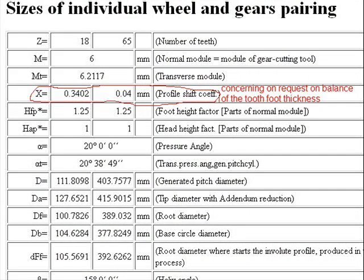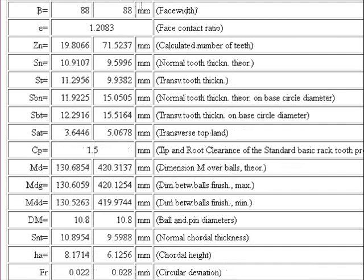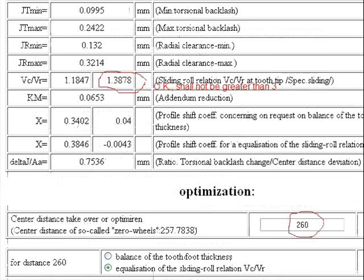The new result list. Profile shift coefficient concerning balance of the tooth foot thickness on request. Sizes of external helical pairing. Sliding speed must be not greater than three times roll speed.